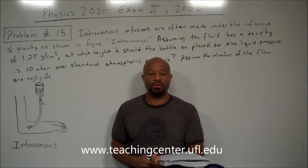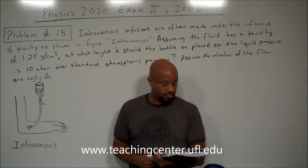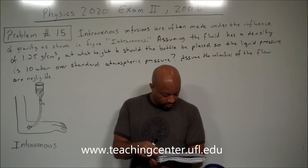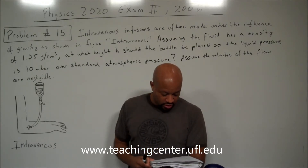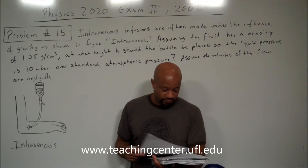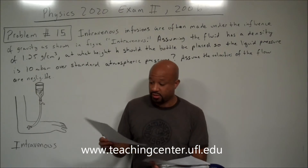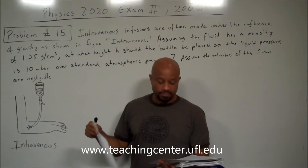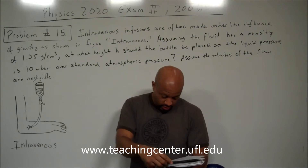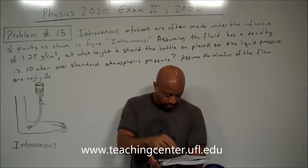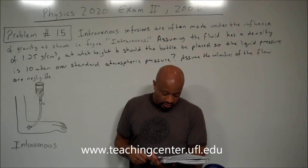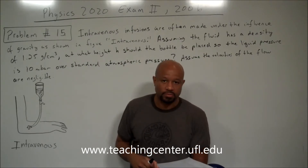I'm going to work through problem number 15 for Physics 2020, Exam 2, year 2006. This problem says: intravenous infusions are often made under the influence of gravity as shown in the figure — and that figure is given on the supplemental sheet for the exam. I've reproduced the figure here. It asks: assuming the fluid has a density of 1.25 grams per centimeter cubed, at what height h should the bottle be placed so that the liquid pressure is 10 millibars over standard atmospheric pressure? Assume the velocities of the flow are negligible.